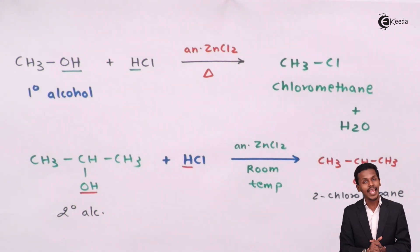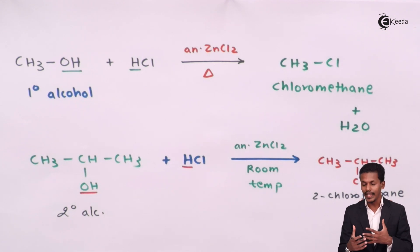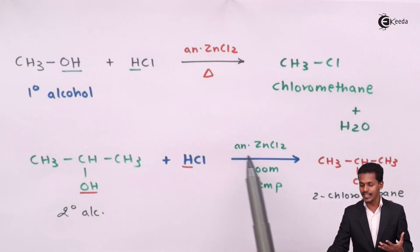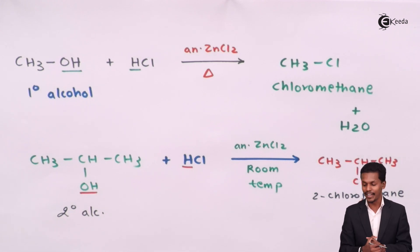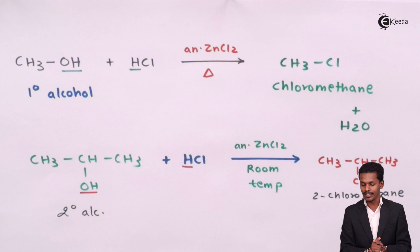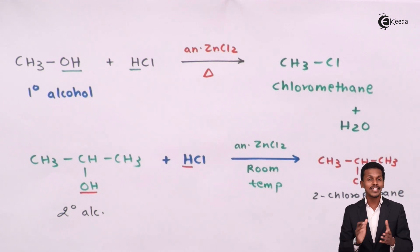Tertiary alcohols can also be reacted with HCl to produce a tertiary alkyl halide. The conditions are the same — anhydrous ZnCl₂ at room temperature. Different types of alcohol react with halogen acids differently under different conditions.